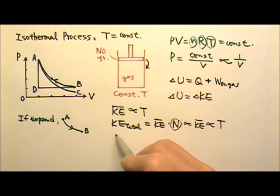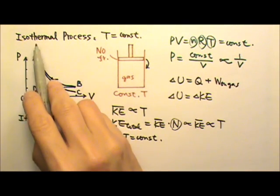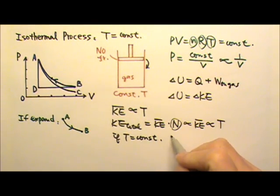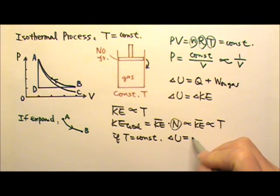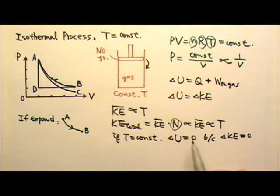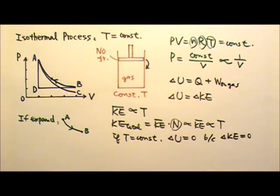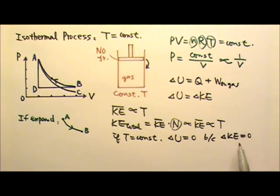So if the temperature is constant, as in isothermal processes, delta U is zero because the kinetic energy does not change. Because kinetic energy only depends on temperature, U only depends on temperature. Constant temperature means constant internal energy, so the change in internal energy is zero.